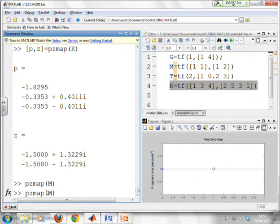Alright, what about K? K was a bit messier. What happens if I do pzmap brackets K?